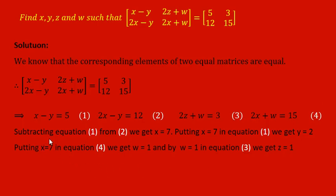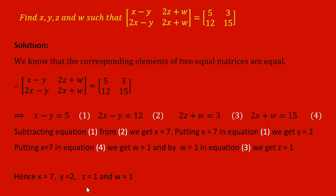X minus Y equals 5 and 2X minus Y equals 12. We subtract equation 1 from equation 2 and get the value of X as 7. Then we put X equals 7 into equation 1 and get Y equals 2. Using the value of X in the fourth equation gives W equals 1. Finally, putting the value of W into the third equation gives Z equals 1. So the value of X is 7, Y is 2, Z is 1 and W is 1.